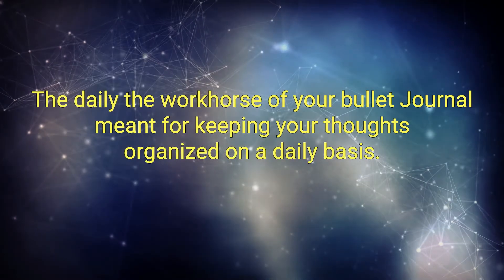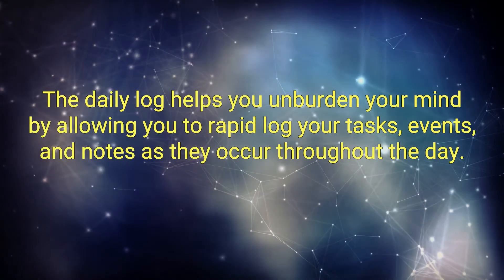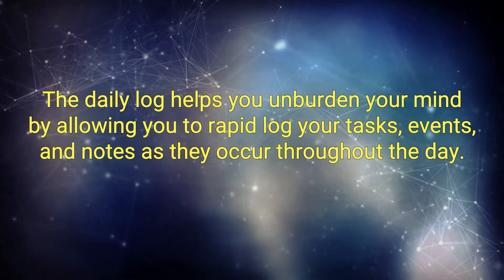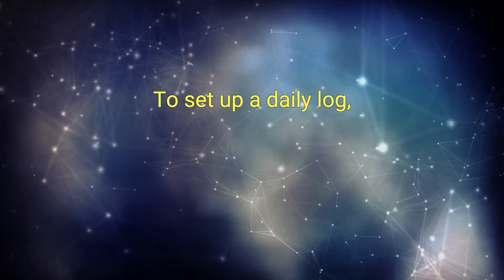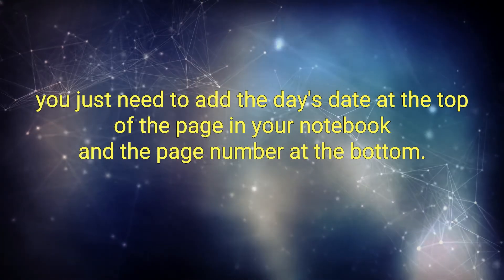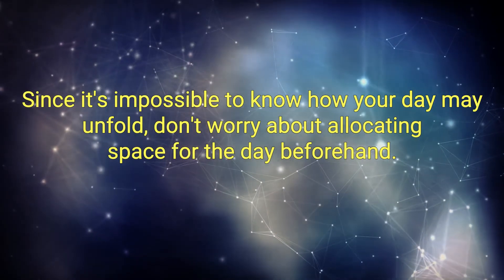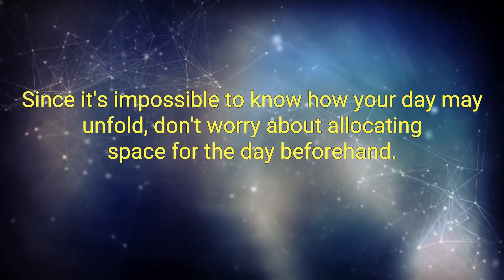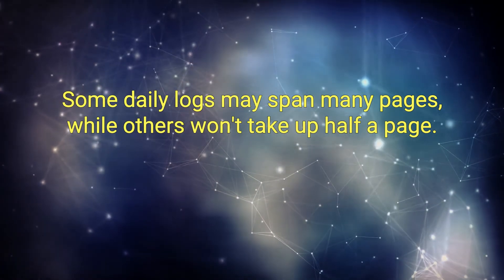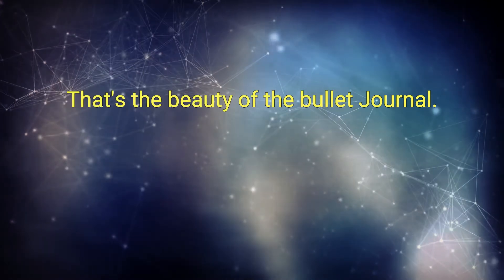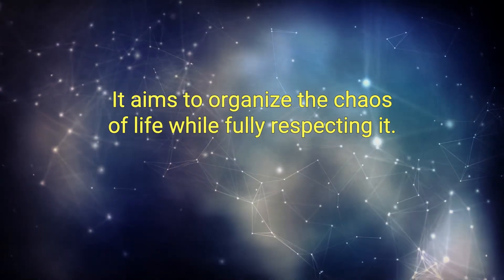The daily log: the workhorse of your bullet journal. Meant for keeping your thoughts organized on a daily basis, the daily log helps you unburden your mind by allowing you to rapid log your tasks, events, and notes as they occur throughout the day. To set up a daily log, you just need to add the day's date at the top of a page in your notebook and the page number at the bottom. Since it's impossible to know how your day may unfold, don't worry about allocating space for the day beforehand. Some daily logs may span many pages while others won't take up half a page. The index will help you find your way around them. That's the beauty of the bullet journal. It aims to organize the chaos of life while fully respecting it.